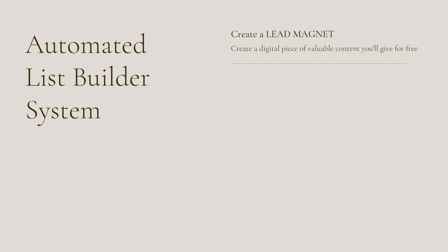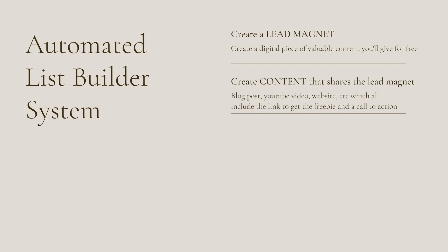So let's recap this in an easy step-by-step process. Number one, create a lead magnet — a digital piece of valuable content that you will give away for free. Number two, create content that shares the lead magnet, such as blog posts, YouTube videos, or a website, all of which can include the link to get the freebie and a call to action. I do not want you to overthink this one. Choose one type of content that is easiest for you to create so that you have more additional information available for those people that won't simply grab the opt-in just from clicking on a lead magnet.